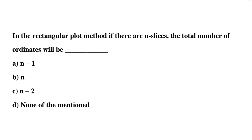Next question: in the rectangle plot method, if there are n slices, the total number of ordinates will be — Option A: n minus 1, Option B: n, Option C: n minus 2, Option D: none of the mentioned. The correct answer is Option A, n minus 1.